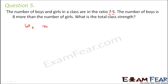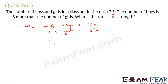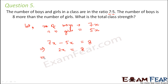Let us say the number of boys is 7x and the number of girls is 5x, so they are in the ratio 7 is to 5. As per the question, the number of boys is 8 more than the number of girls. So if you subtract the number of girls from the number of boys you get 8. This gives us the equation 7x minus 5x equals 8, which is 2x equal to 8.